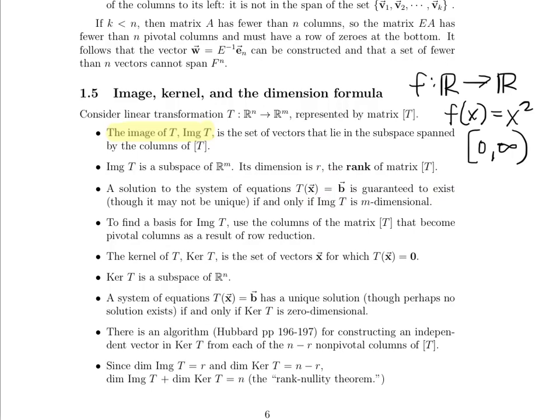You might be wondering: the image is a subspace — how do I find a basis for it? We use the columns of the matrix T. A basis is a set of linearly independent vectors, so we take T, row reduce it, and look at the pivotal columns. The pivotal columns correspond to vectors that are linearly independent from each other. So to find a basis for the image, take T, row reduce it, and the columns that end up with a pivotal one in them are linearly independent and give us the basis.